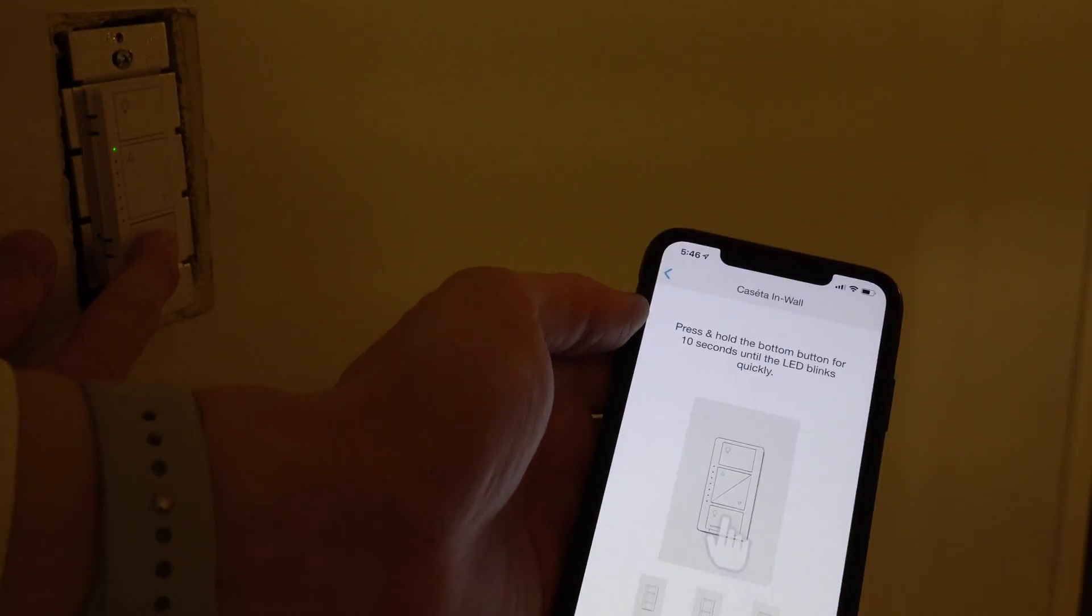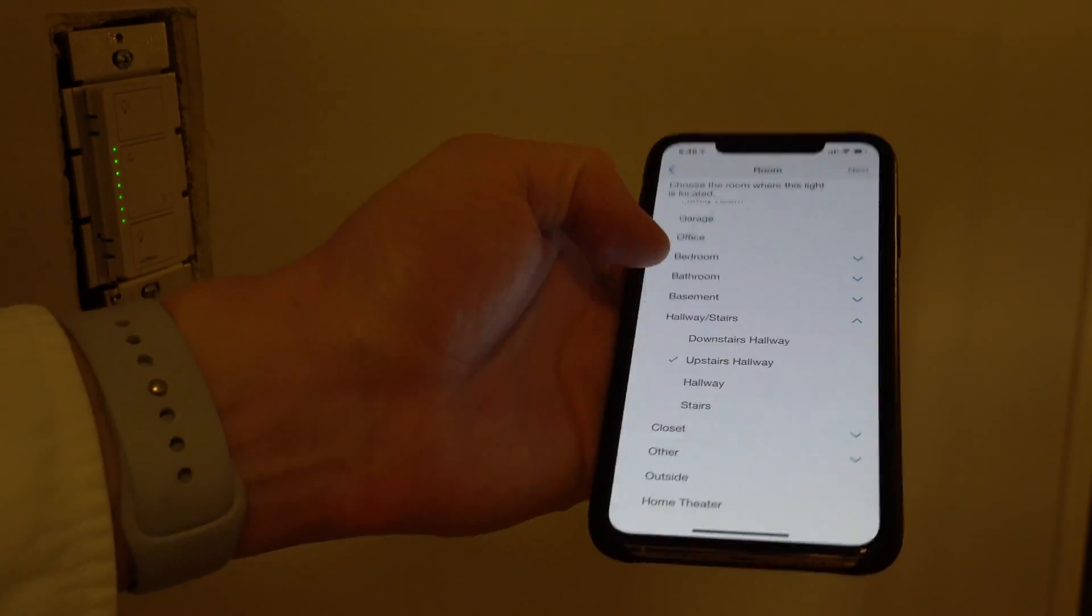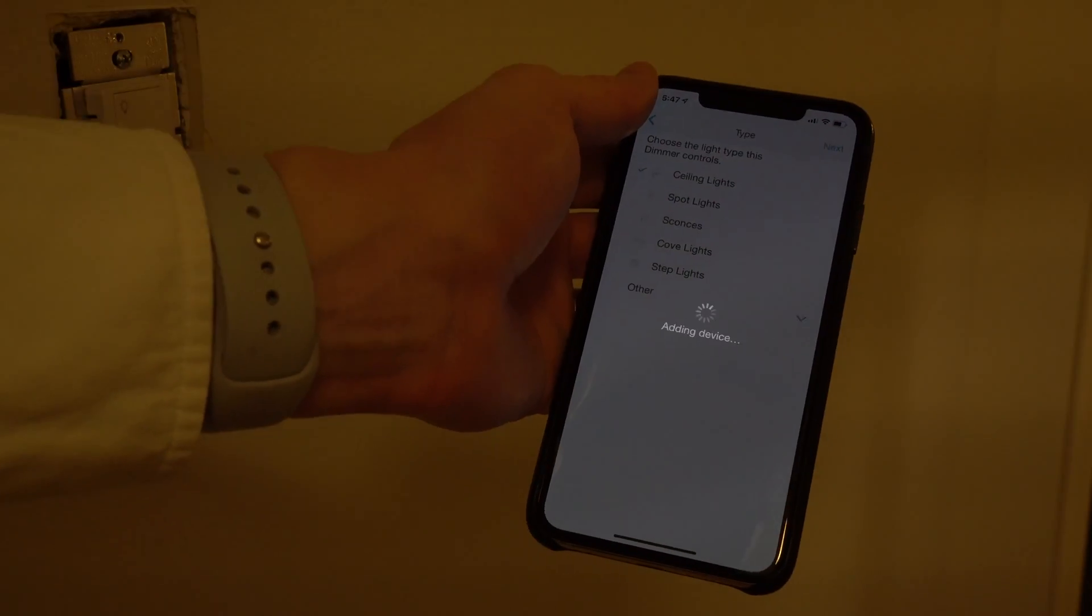From there you just need to open the Lutron app on your phone and pair these switches with the Lutron app, and that will help set them up in HomeKit and any other smart home services that you might use. The app will also walk you through the process of pairing the Pico remote with the specific light switch you want to use with it.